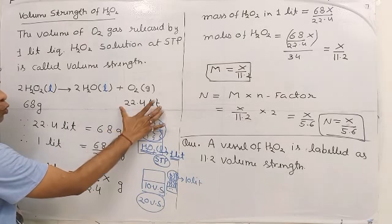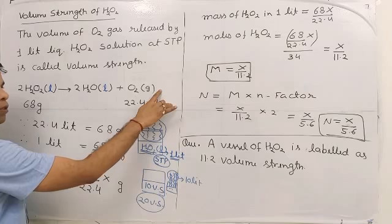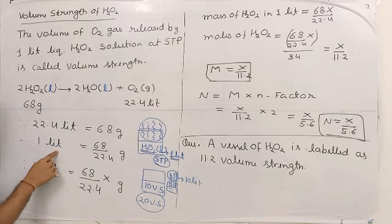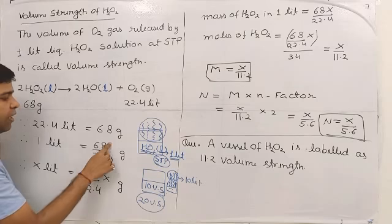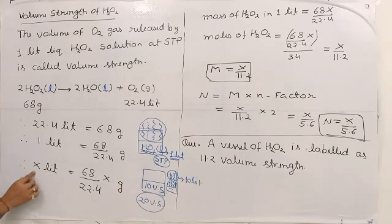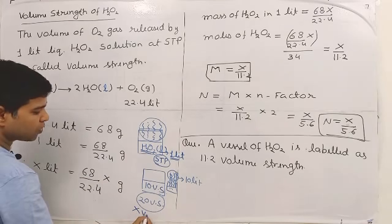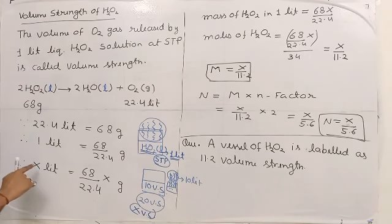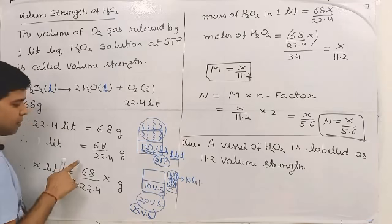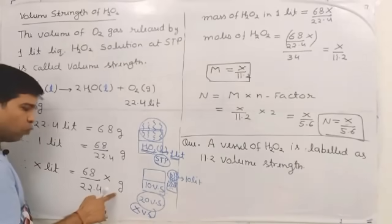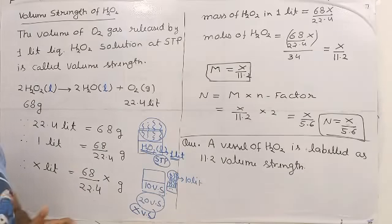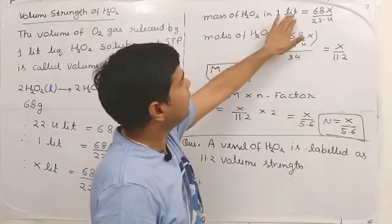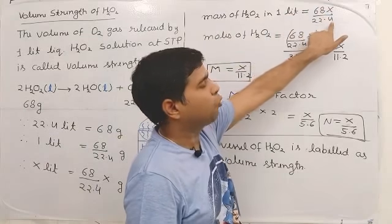So we can say: 22.4 liters of oxygen gas is released by 68 grams of H2O2. Therefore, 1 liter of oxygen gas is released by 68/22.4 grams of H2O2. If a container is labeled 'x volume strength,' then x liters of oxygen gas would be released by (68x / 22.4) grams of H2O2. So the mass of H2O2 in 1 liter of the liquid is 68x / 22.4.